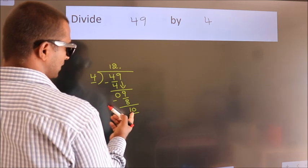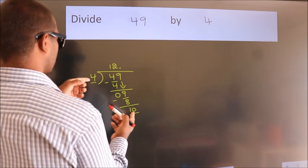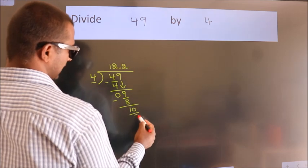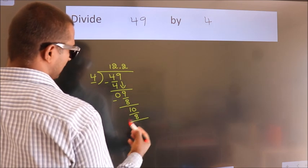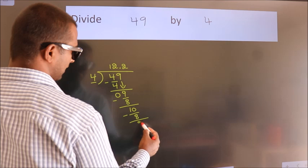A number close to 10 in 4 table is 4 times 2, which is 8. Now we subtract, we get 2.